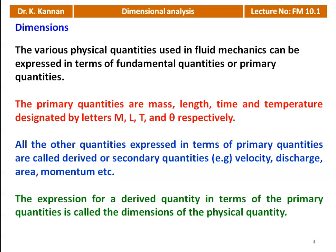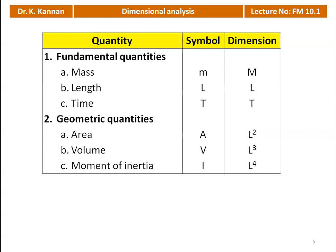All quantities are represented in terms of the basic quantities MLT. The expression for derived quantities in terms of primary quantities is called the dimensions of the physical quantity. The fundamental quantities are mass, length, and time, with symbols M, L, and T. Geometry quantities: area A has dimension L², volume has dimension L³, and moment of inertia has dimension L⁴.